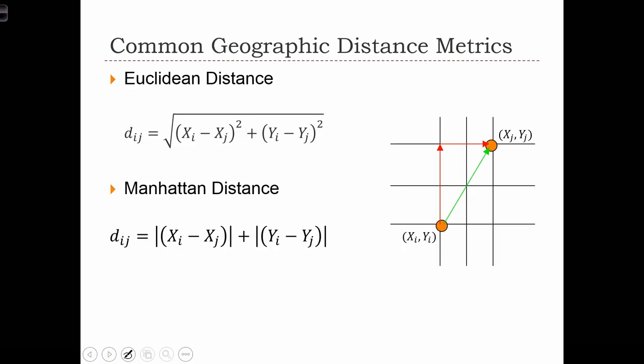Here we have some of the formulas for the Euclidean distance and Manhattan distance. This formula you should recognize as just the length of the hypotenuse of this right-angle triangle. We see that xi minus xj is just the separation in the x-dimension between the two points. So in other words, it's got this length over here. That's xi minus xj.